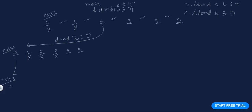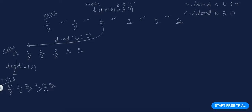What happens if I roll a two and then a zero? On roll three — my last roll — I could roll zero, one, two, three, four, or five. This call is DOND(6, 1 roll left, last roll = 0). If I roll a zero or one I lose; if I roll a two, three, four, or five I win.